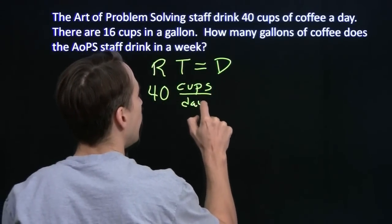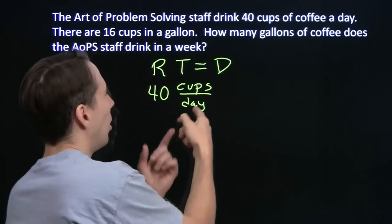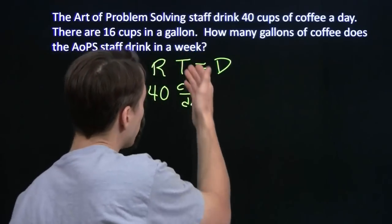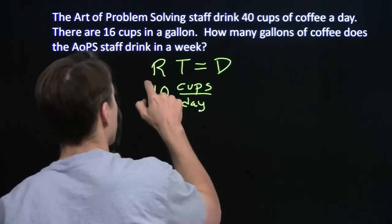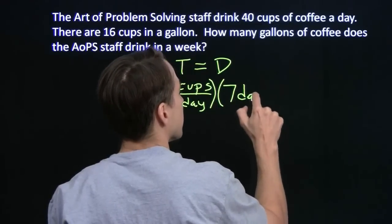And the amount of time we're interested in is one week. One week. Now, of course, our rate is in terms of days, so we need our time to be in terms of days as well. So that one week, we're going to turn that into seven days. That's right, we work hard here, no weekends for us.